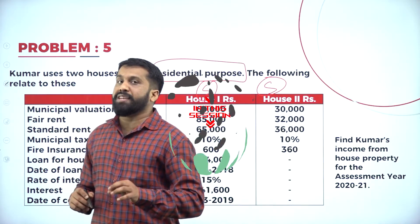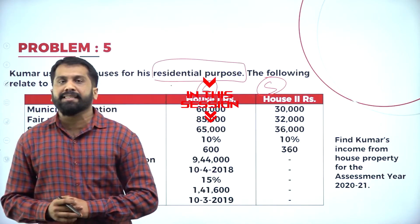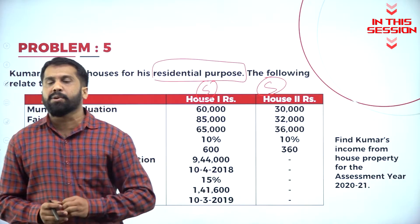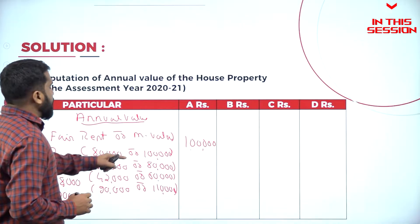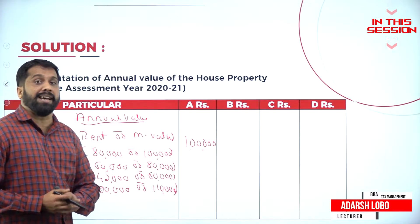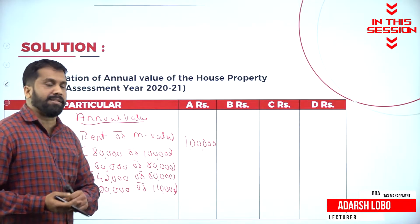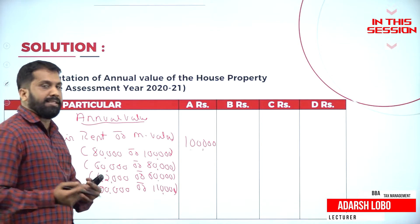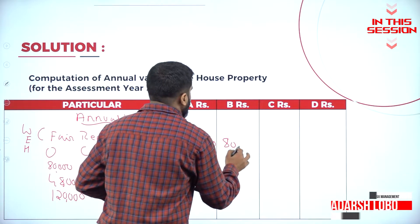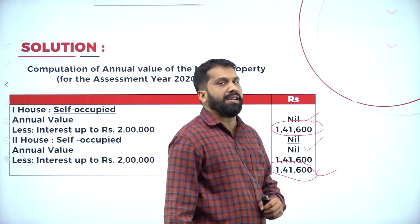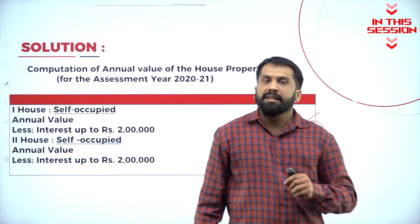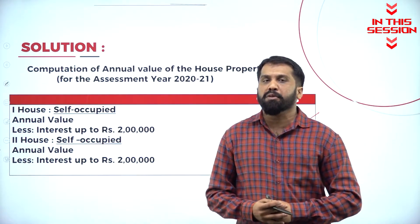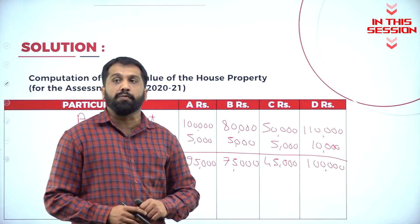If it is self-occupied, do we calculate anything? The answer is no. Comparing 80,000 with 80,000, the answer is the same — you will get 80,000. This is not income from house property; this is loss from house property. For net annual value, we should deduct 30 percent.